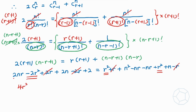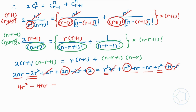For the r term: right-hand side has 2nr and left-hand side has negative 2nr, giving negative 4nr. For terms in n only, we get 2n, and combining everything on the right-hand side gives n squared minus n minus 2. So the final quadratic equation is 4r squared minus 4nr plus n squared minus n minus 2 equals 0. We are ready to solve this quadratic equation in part 2.